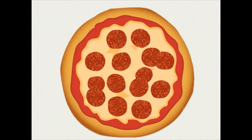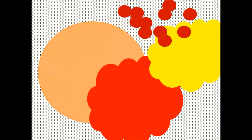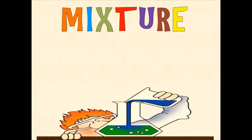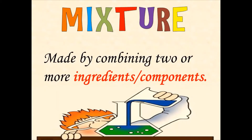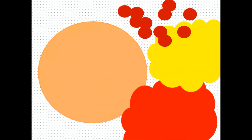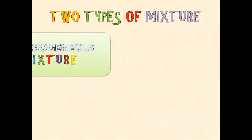Have you ever tried to make your own pizza? I have here a pepperoni pizza — not the separate ingredients, but the pizza itself. We have pepperonis, the cheese, the tomato sauce, and the pizza bread. Did you know that this pizza is actually a mixture? A mixture is made by combining two or more ingredients or components. In our pizza, the pepperonis, cheese, tomato sauce, and pizza bread are the ingredients or components of the mixture.